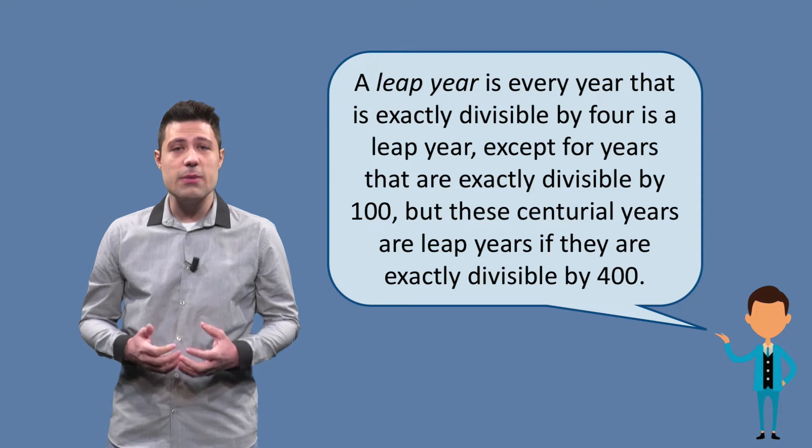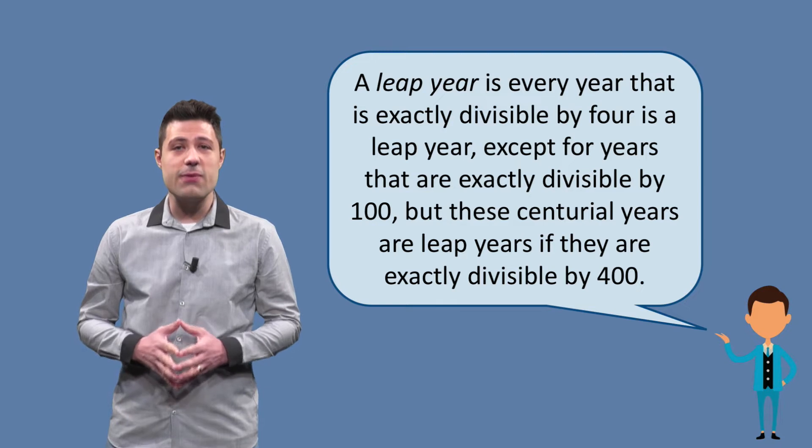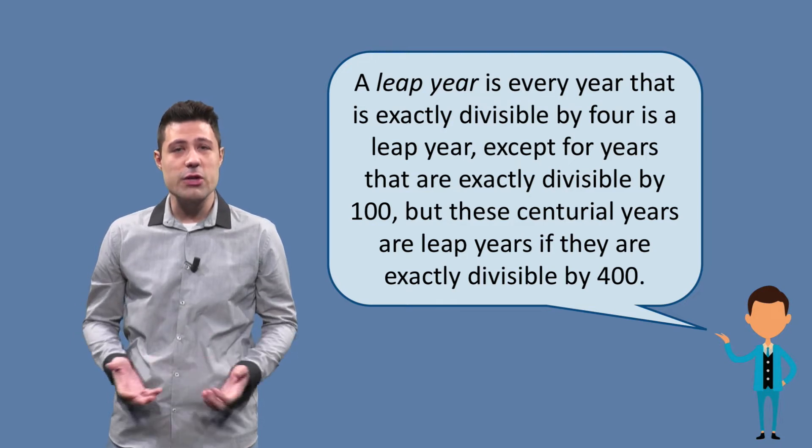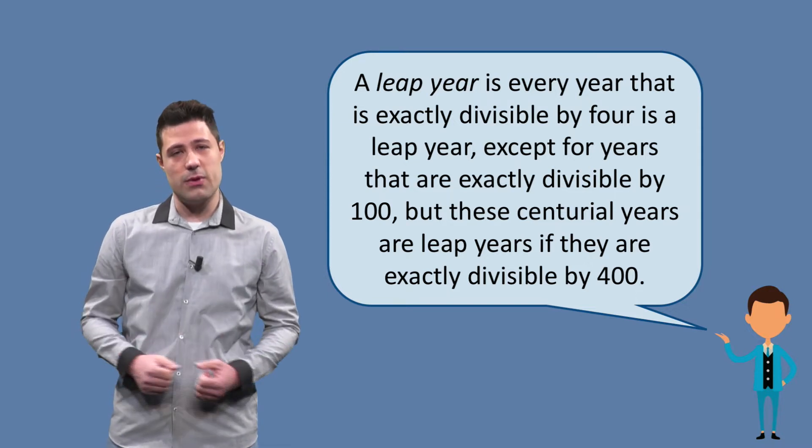To calculate this leap year, we have some criteria. A leap year is a year that can be divided by 4 exactly. In other words, if we divide the year by 4 and the remainder is 0, then it is a leap year.